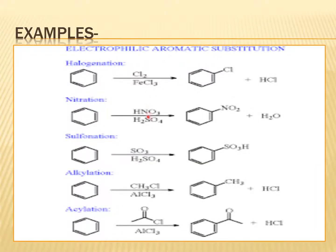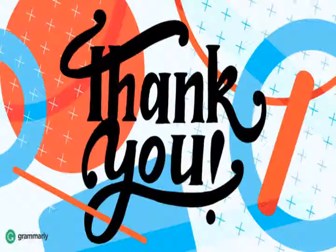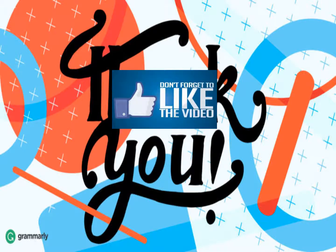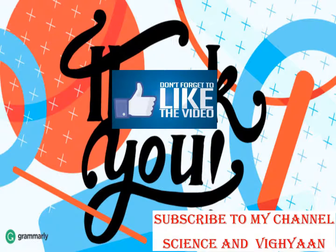These are examples of electrophilic substitution reactions. This is electrophilic aromatic substitution — halogenation, where chlorine is attached; nitration; sulfonation; alkylation; and acylation. If you want to know their mechanisms, please comment in the comment box and I will explain in detail. Thank you. If you really liked this video, please do subscribe to my channel and don't forget to like and share. Thank you.